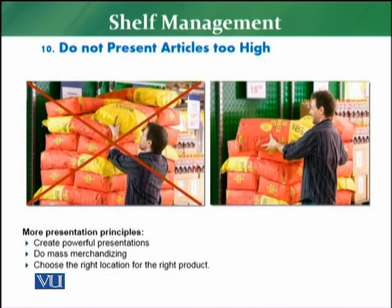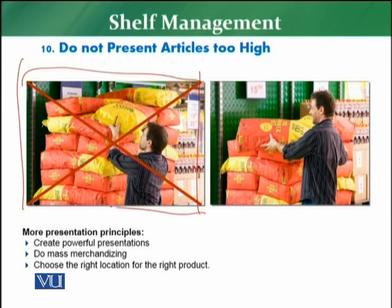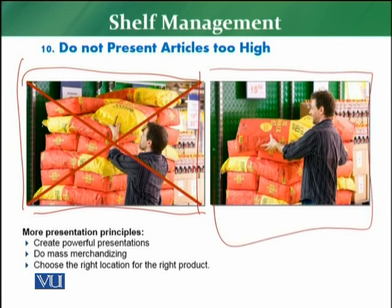This display of the product elaborates what kind of display you should make. If the display is too high, it can create a problem for the customer, and the customer may leave because they will not be able to pick that product. However, if the display is at the right height, it is an ideal example because it is easily accessible for the customer.